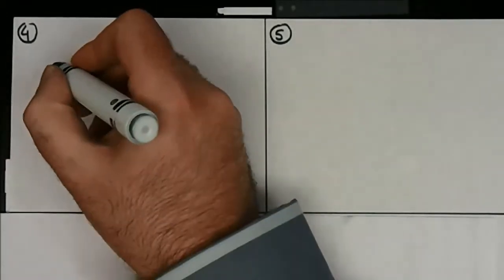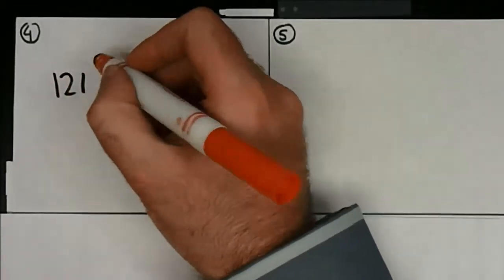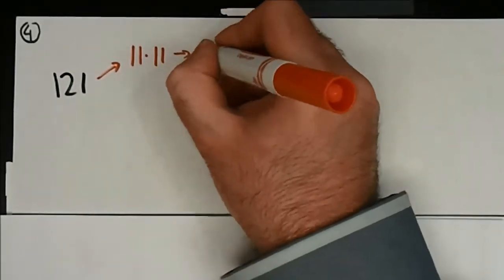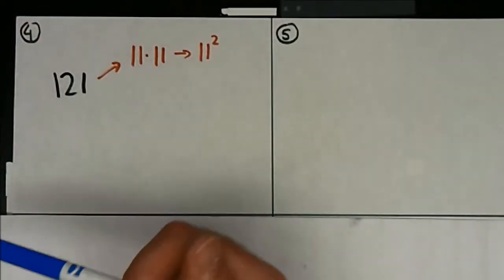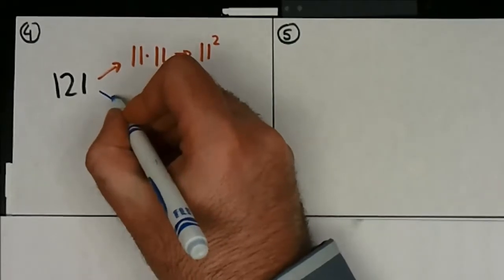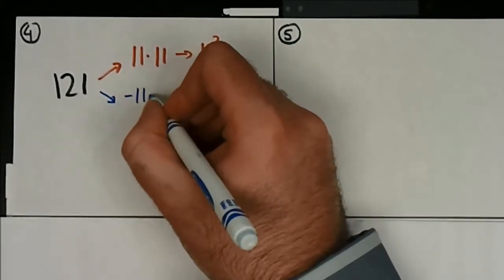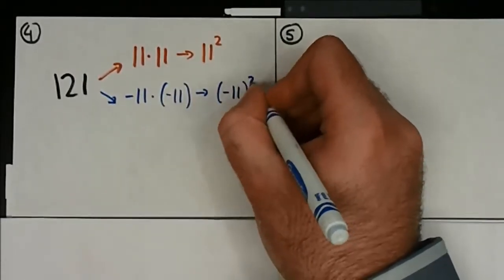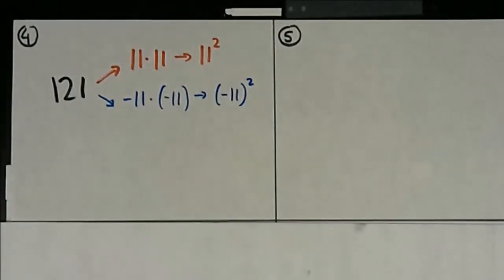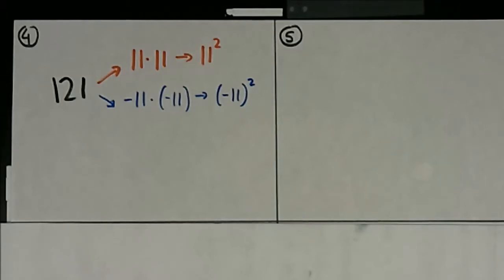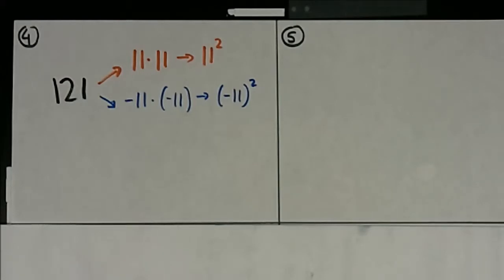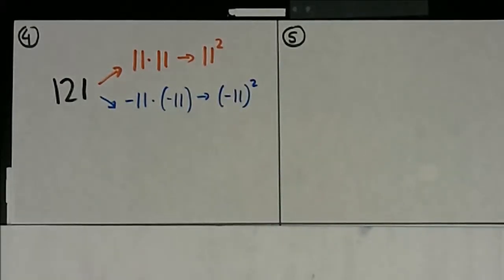For example, one twenty-one — to get its exponential forms I can either multiply eleven times eleven, which is eleven squared, or I can multiply negative eleven times negative eleven, which is of course negative eleven squared. So because of the way perfect squares work, and you're multiplying two numbers together to achieve their exponential forms, there are two ways to get that: the positive and the negative.